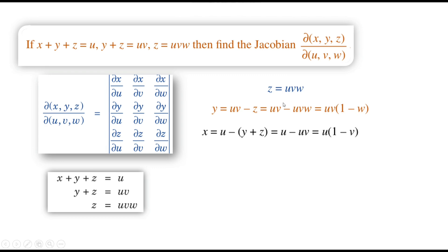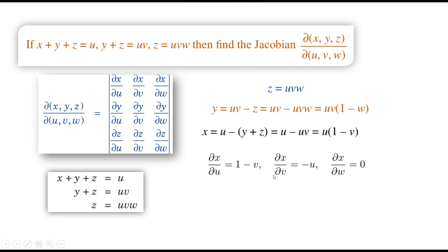Now calculate the partial derivatives of x, y, and z with respect to u, v, and w. To calculate the partial derivative with respect to one variable, treat all other variables as constants. For x equals u(1 minus v): ∂x/∂u equals 1 minus v, ∂x/∂v equals negative u, and ∂x/∂w equals 0.